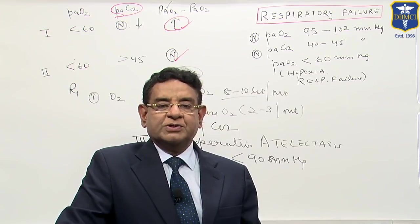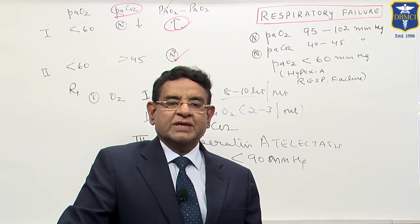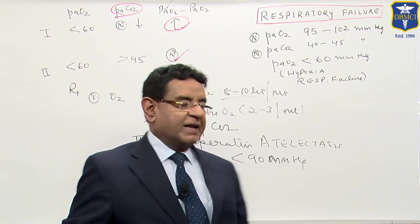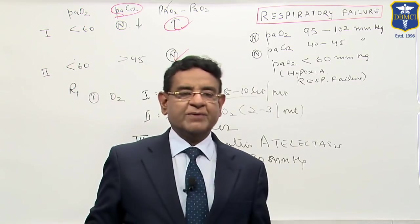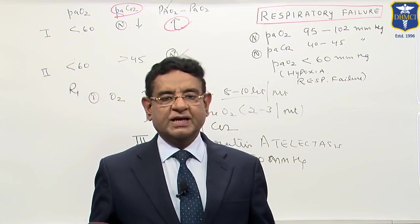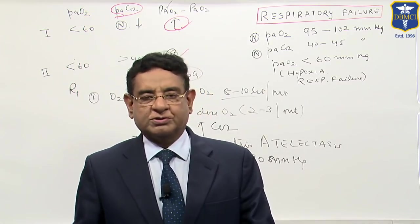So lung tissues and chest muscle all are less perfused and that lead to so called type 4 respiratory failure. So anything which lead to shock is type 4 failure. Again, in that condition, you have to treat the shock and of course, with oxygen also.